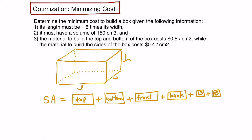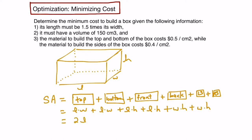Now let's put in some variables. The top of the box has area length times width, and the bottom of the box is the same: length times width. The front and back of the box are each length times height. The left and right sides are each width times height. Collecting like terms, we get surface area equals 2·L·W plus 2·L·H plus 2·W·H.